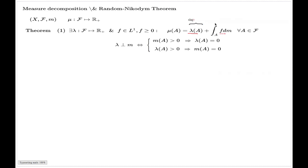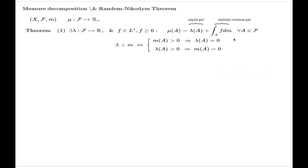These two parts in the decomposition of the original measure mu have names. This one is called the singular part and this one is called the absolutely continuous part of the decomposition. Shortly speaking, the first part of the theorem says that every measure can be split into a singular and absolutely continuous part with respect to another measure.